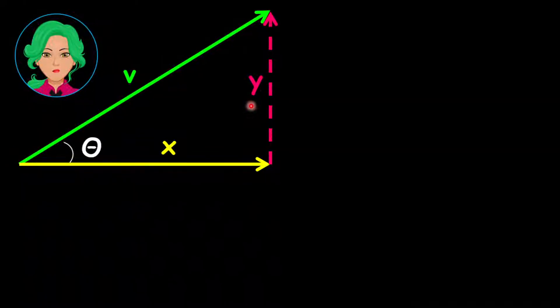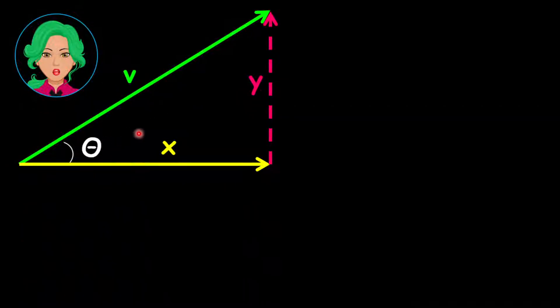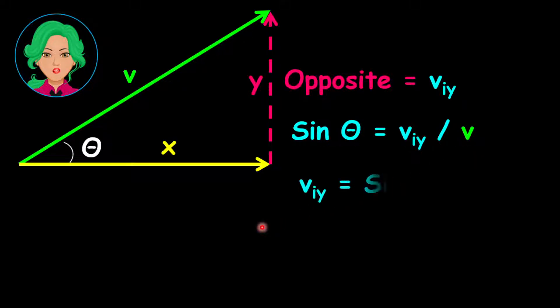Look at the triangle carefully. Y is the opposite side to the angle. Y is the same as the vertical initial velocity. Remember that the sine of the angle equals the opposite side divided by the hypotenuse. Therefore, the vertical initial velocity, or the Y component, equals the sine of the angle multiplied by V.